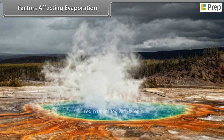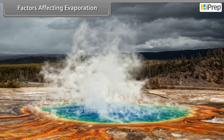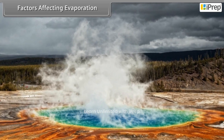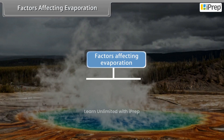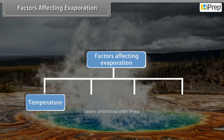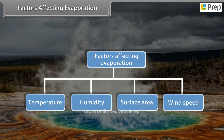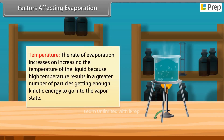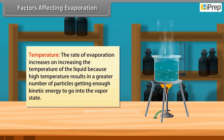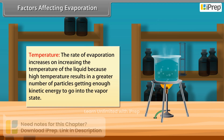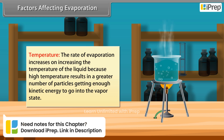Factors Affecting Evaporation. The evaporation of a liquid depends mainly on the following factors: temperature, humidity, surface area, and wind speed. Temperature: The rate of evaporation increases on increasing the temperature of the liquid, because high temperature results in a greater number of particles getting enough kinetic energy to go into the vapor state.